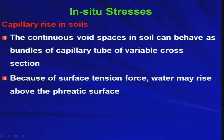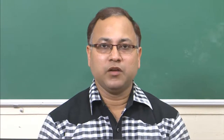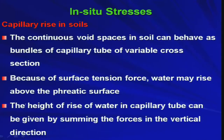Because of surface tension force, water may rise above the phreatic surface. The phreatic surface is the free water surface — the top level of the water table — which is exposed to the atmosphere, meaning on top of the phreatic line you have atmospheric pressure. The height of rise of water in a capillary tube can be given by summing the forces in the vertical direction, as we know from physics or fluid mechanics.